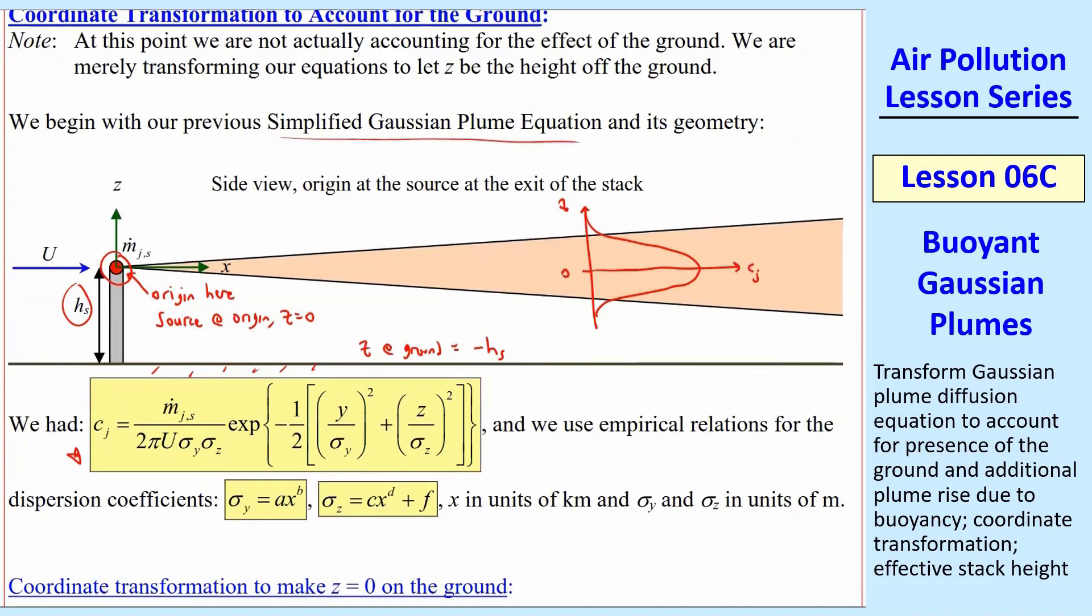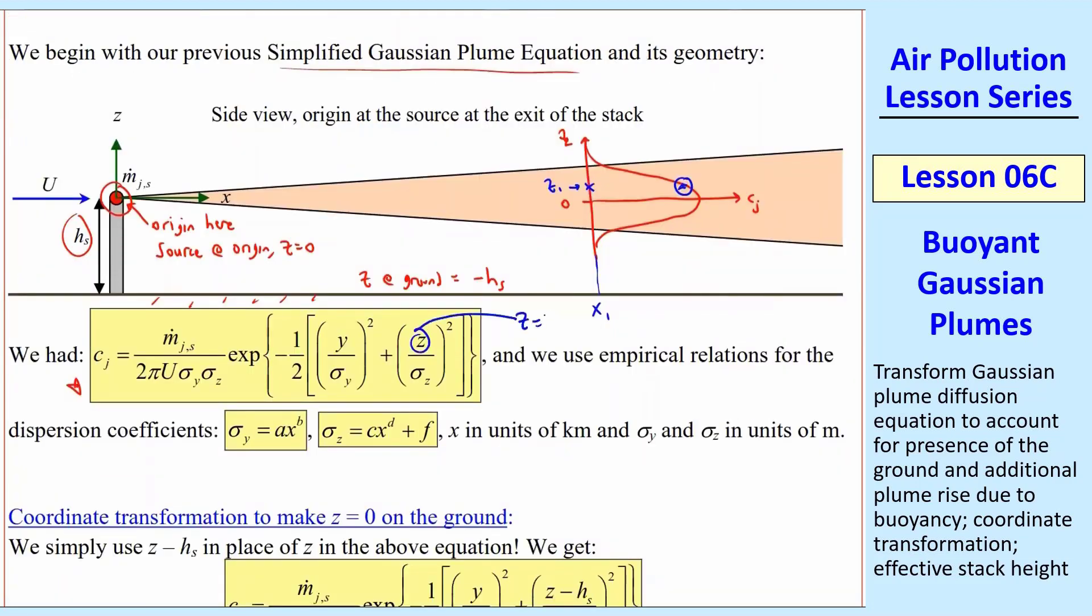Now let's consider some location here at z equals z1, and that's the location of interest. What's the concentration there? The concentration there will be right here. So that's the concentration at location z1 at some x1. We would put in z equal z1 to get that value in this equation.